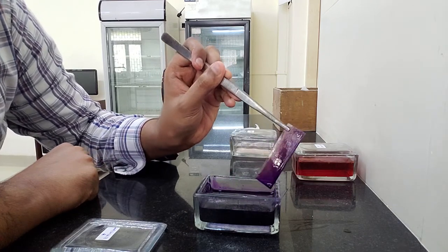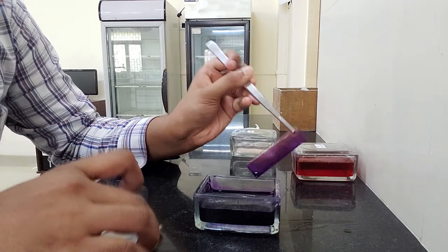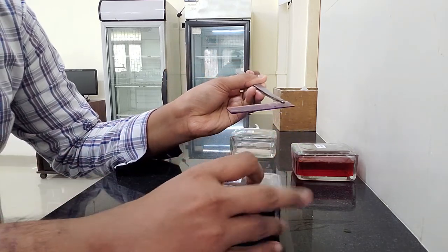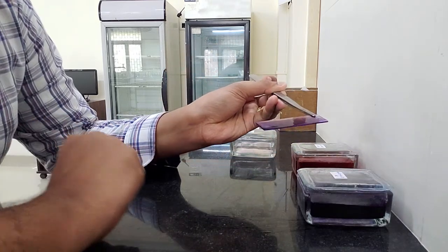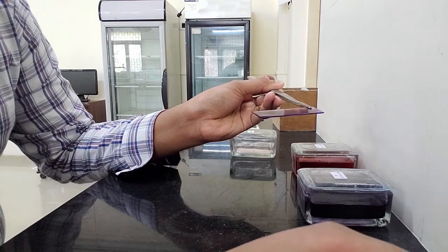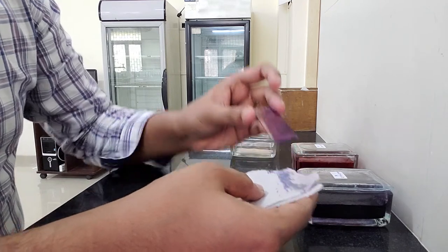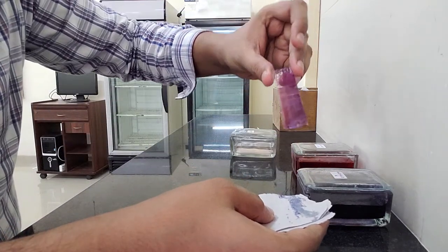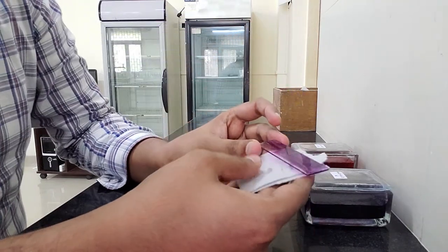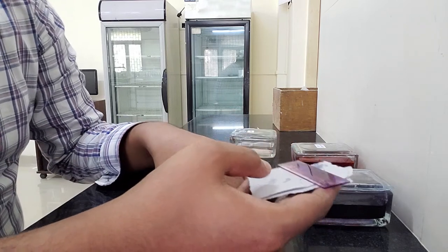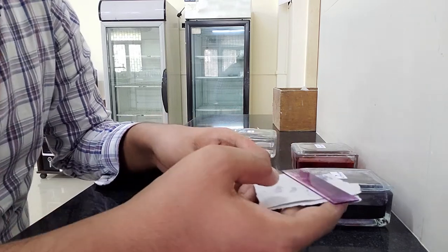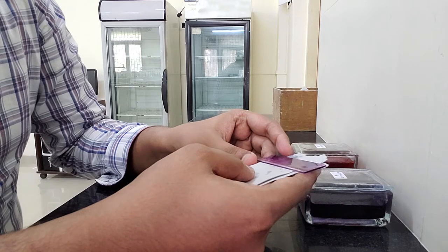Once that's done, once 10 seconds exposure is done, I'm going to gently remove my slide from it. I am going to close Field stain A and gently rinse it under water. After rinsing it with water, this is how my slide looks like. It's stained completely.